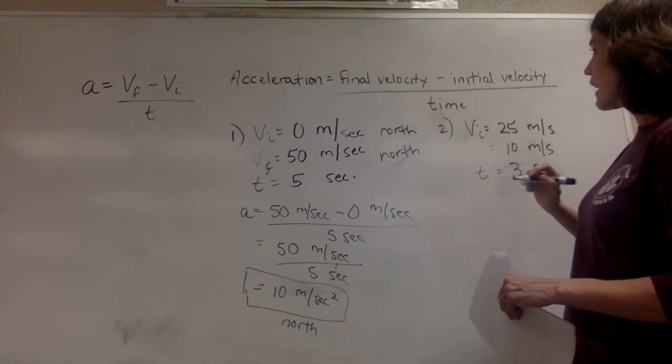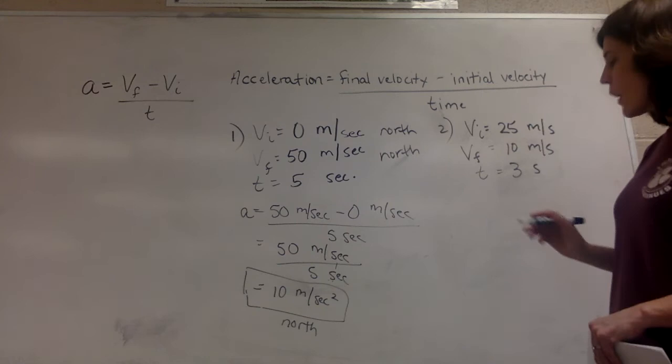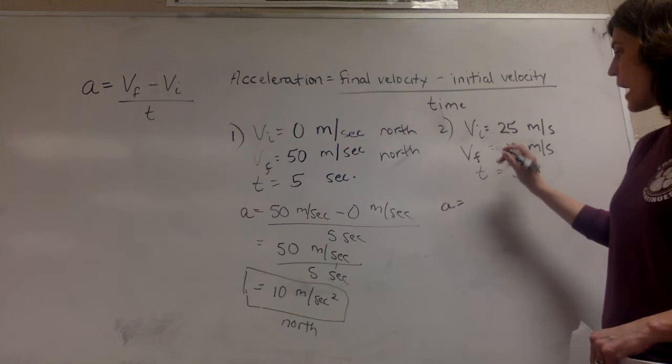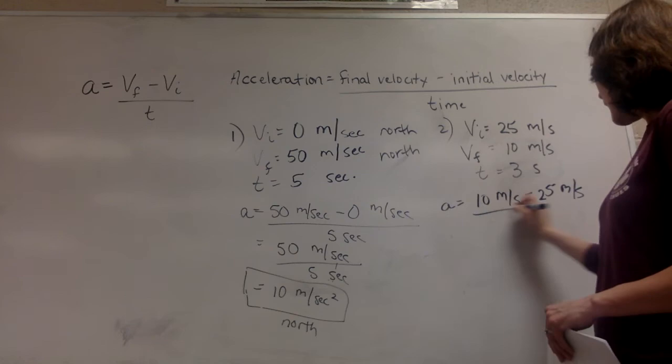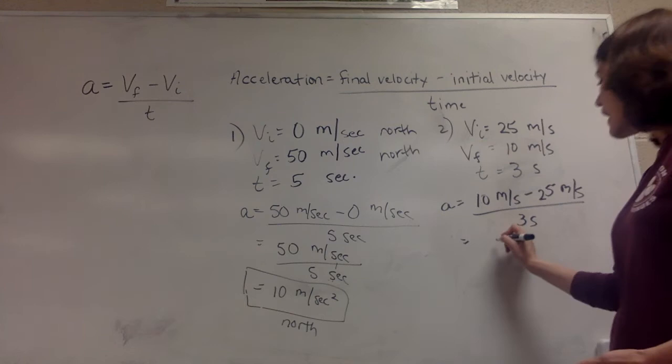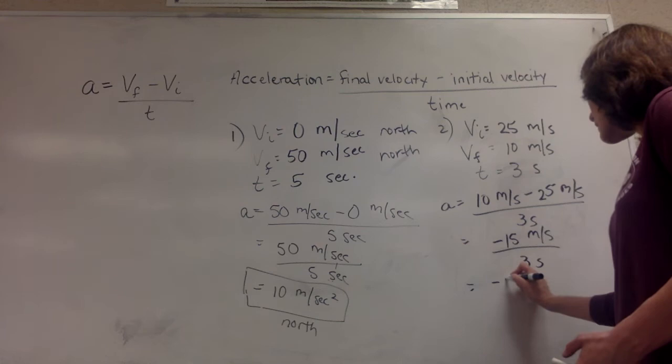If you've ridden a roller coaster, you know this — you're at the bottom going really fast, and as you head up the hill you slow down slightly. Plugging in: you always do final minus initial. So velocity final, which is 10 meters per second, minus the initial velocity, which is 25 meters per second, divided by time, which is 3 seconds. Then use your calculator: 10 minus 25 is negative 15 meters per second — it's okay to have a negative number — divided by 3 seconds, and that gives you negative 5 meters per second squared. The direction would be up the hill.